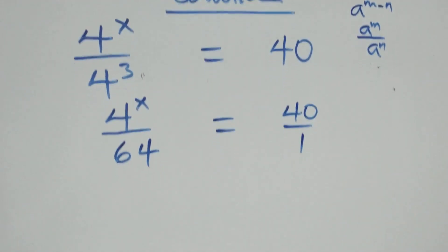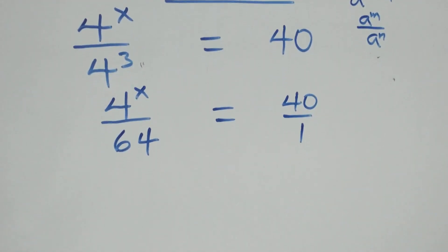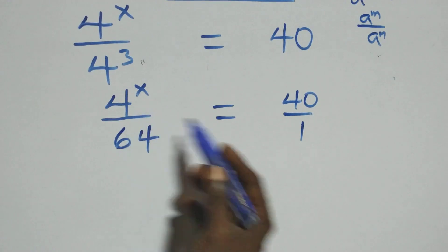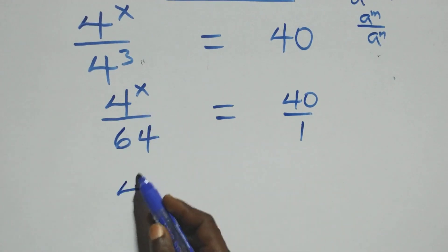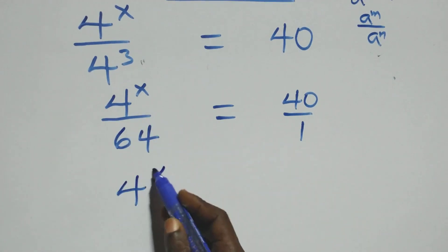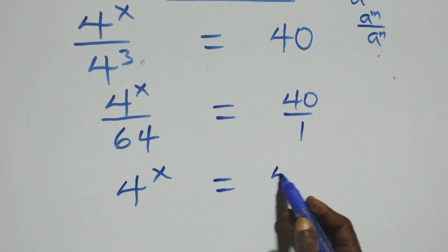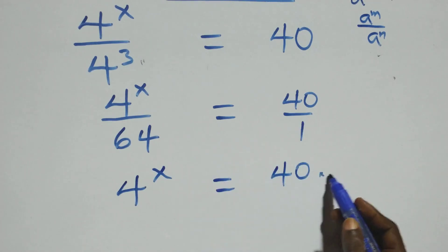The next step here, we cross multiply. That is 4 raised to power x times 1, which is the same thing as 4 raised to power x equals 40 times 64.